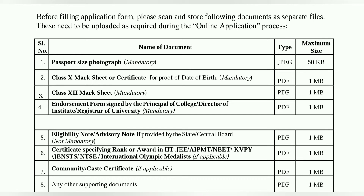The fourth document is an endorsement form, under 1MB in size, signed by the principal, college director, or head of institute, and the registrar of the university. You download this from the registration or login section on the right side of the portal, print it out, fill it up with the principal or director's signature and stamp, then scan and upload it in PDF format.